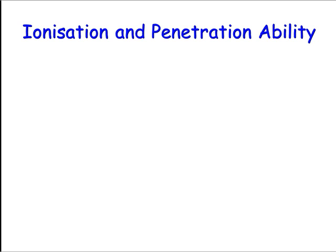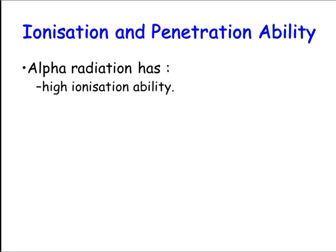Starting with alpha radiation — it has a double positive charge, with two protons in an alpha particle. When we're talking about an interaction or collision with an electron, because of the attraction between positive and negative, we're going to have loads of interactions, loads of ionisation encounters. So the ionisation ability is quite high for alpha radiation.